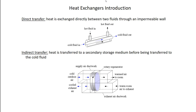Heat exchangers come in two categories. We have direct transfer heat exchangers, shown up here at the top. That's a situation where you're literally transferring heat directly from one fluid to another fluid through some kind of a wall. Here we have a hot fluid flowing in the annular space and a cold fluid flowing inside the tube, with the hot fluid transferring energy to the cold fluid across the wall of the tube. That's a direct transfer heat exchanger.